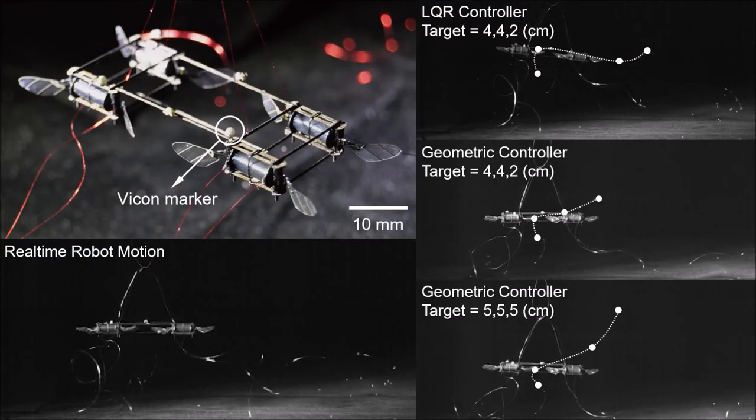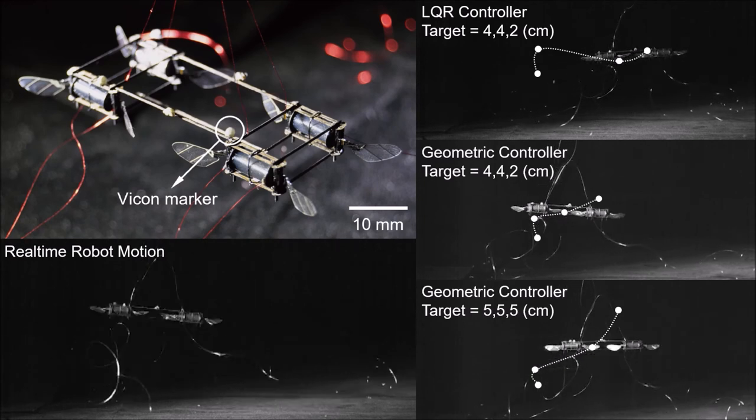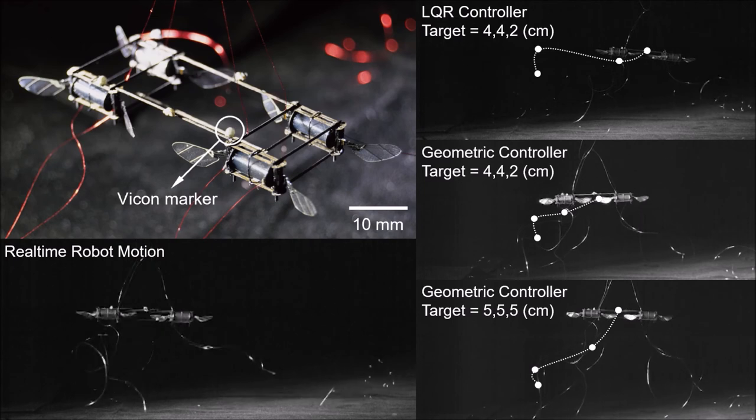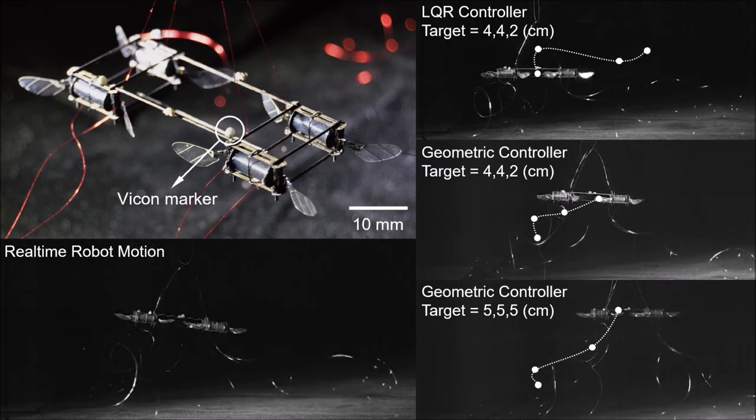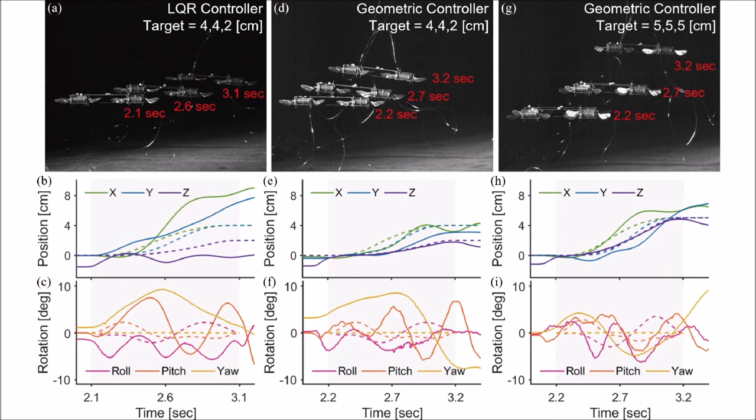Finally, we implemented all the optimized trajectory and controllers to the actual robot hardware. We used a motion capture system for position feedback, and we implemented both LQR and geometric controllers with varying target points in 3D space. This is the result of our robot experiment.